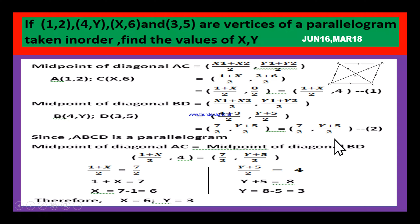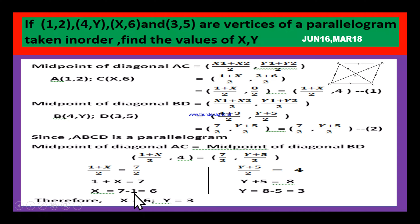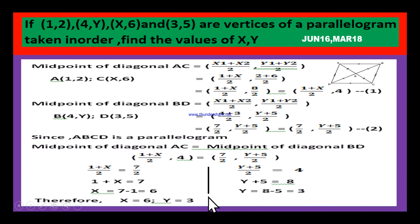Since ABCD is a parallelogram, the midpoint of diagonal AC equals the midpoint of diagonal BD. Equating: (1 + X)/2 = 7/2, so 1 + X = 7, and X = 6. Equating Y coordinates: (Y + 5)/2 = 4, so Y + 5 = 8, and Y = 3. Therefore X = 6 and Y = 3 are the required values.